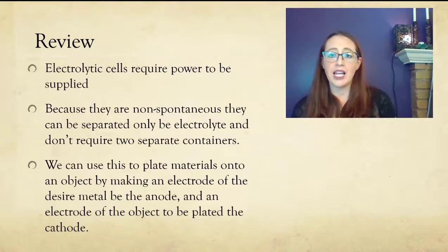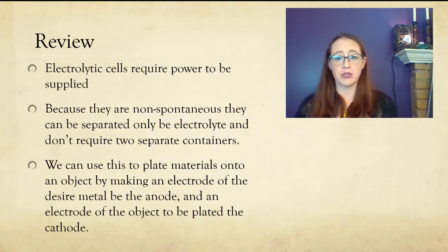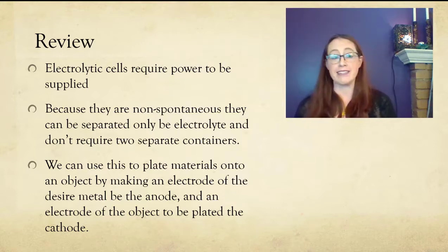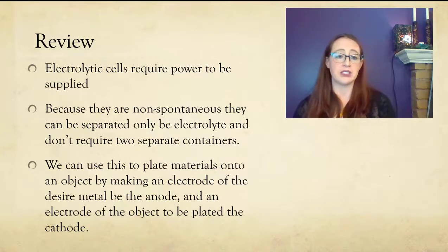In review, electrolytic cells require power to be supplied to them because they are a non-spontaneous reaction. This allows them to be contained within one container because the anode and the cathode are occurring at different electrodes within the solution. Electroplating is one way that we can harness this to protect certain metals from corrosion or coat a cheaper metal with something that looks more expensive and looks nicer for aesthetic purposes. In the next video, we're going to talk a bit more about the specifics of corrosion and galvanizing and using electrolytic cells to protect species.